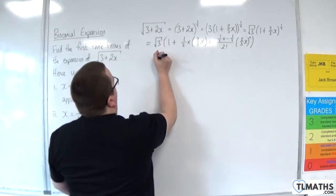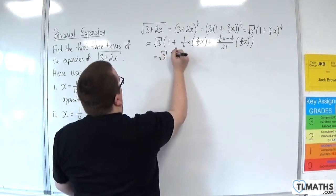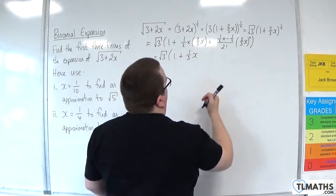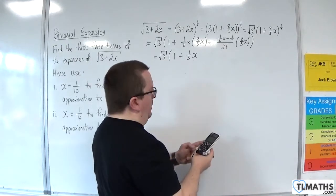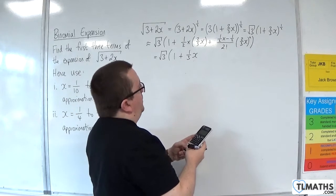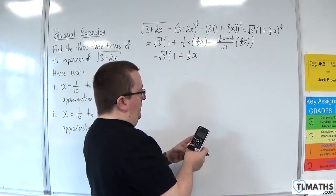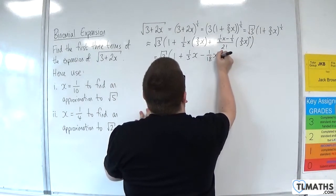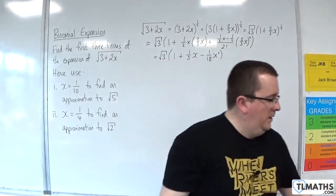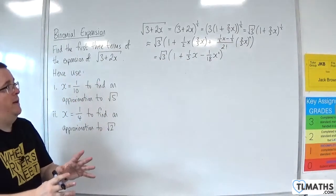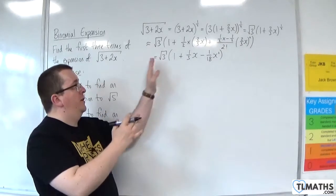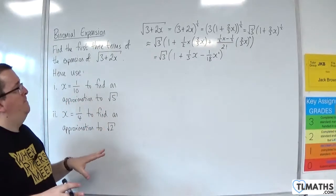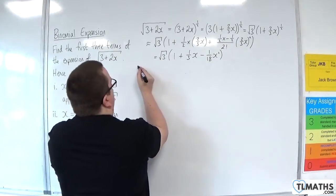So we've got root 3 times by 1 plus 1 third x. Then we're going to have 1 half times minus 1 half, so minus 1 quarter, divided by 2 factorial, times by 2 thirds squared, giving minus 1 over 18. So minus 1 over 18 x squared. I could expand the bracket out if I wanted to, but for the purposes of this video, I'm just going to leave it as it is — it'll make everything look a little bit neater.